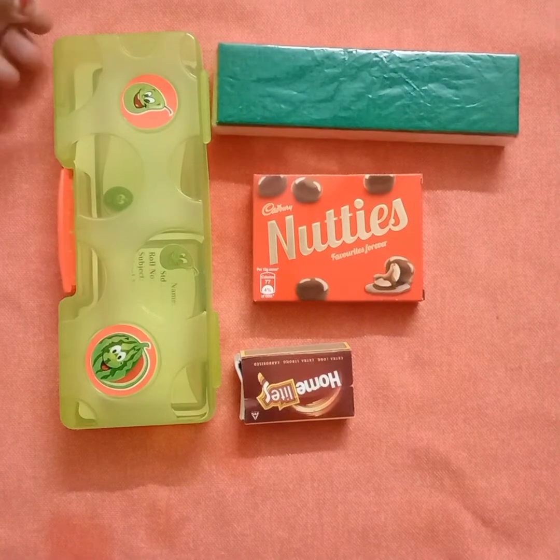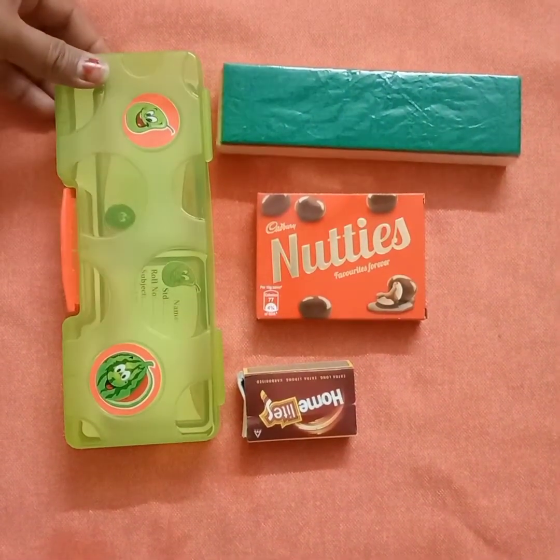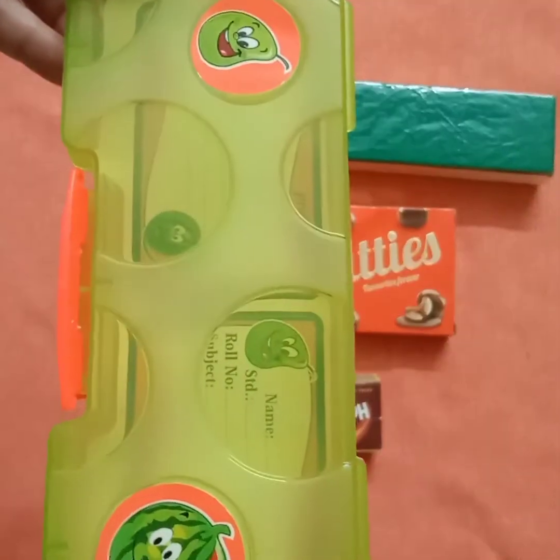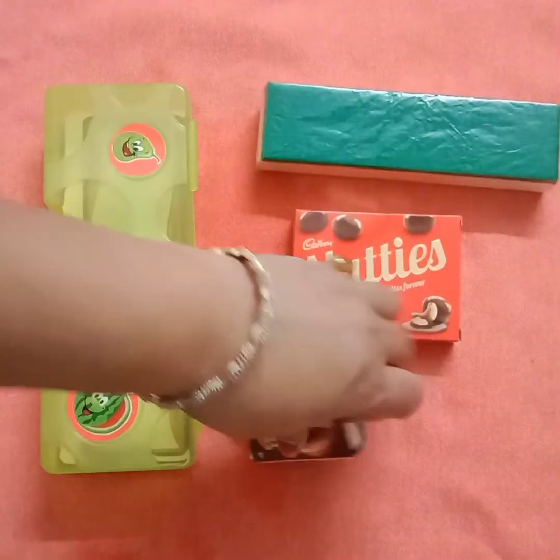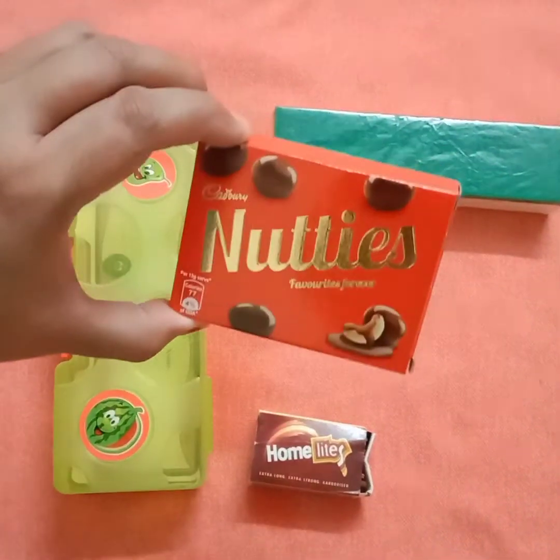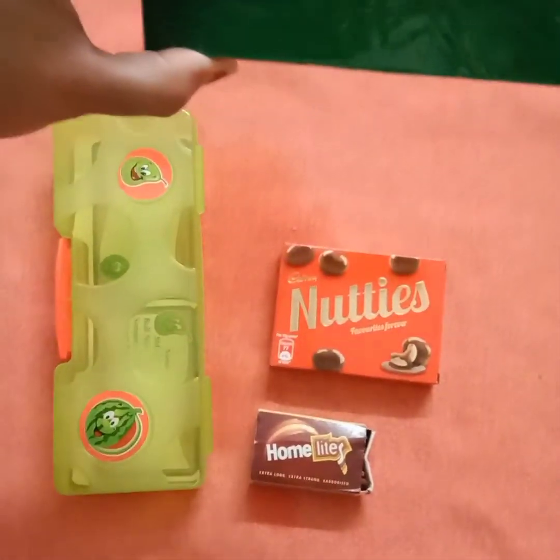Our next 3D shape is a cuboid. Some of the examples of cuboid are pencil box, matchstick box, chocolate box and duster.